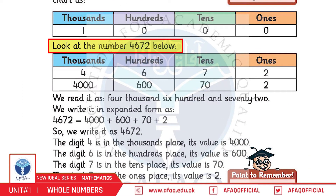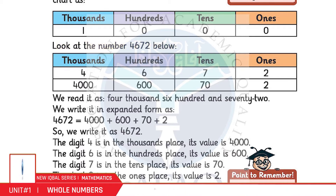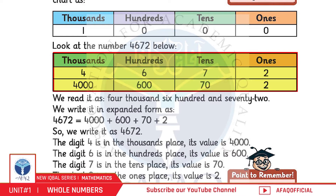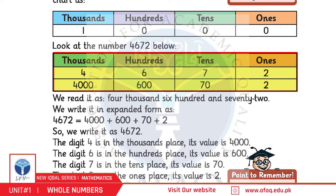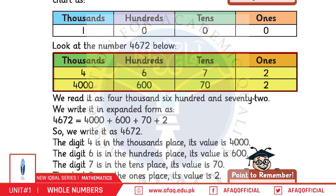आप 4,672 की तरफ देखें। इस नंबर में 4 का Place Value है Thousands, 6 का Place Value है Hundreds, 7 का Place Value है Tens। 1000 में हमारे पास 4000 है, जबके Hundreds में हमारे साथ 600 है और Tens में हमारे साथ 7 Tens।